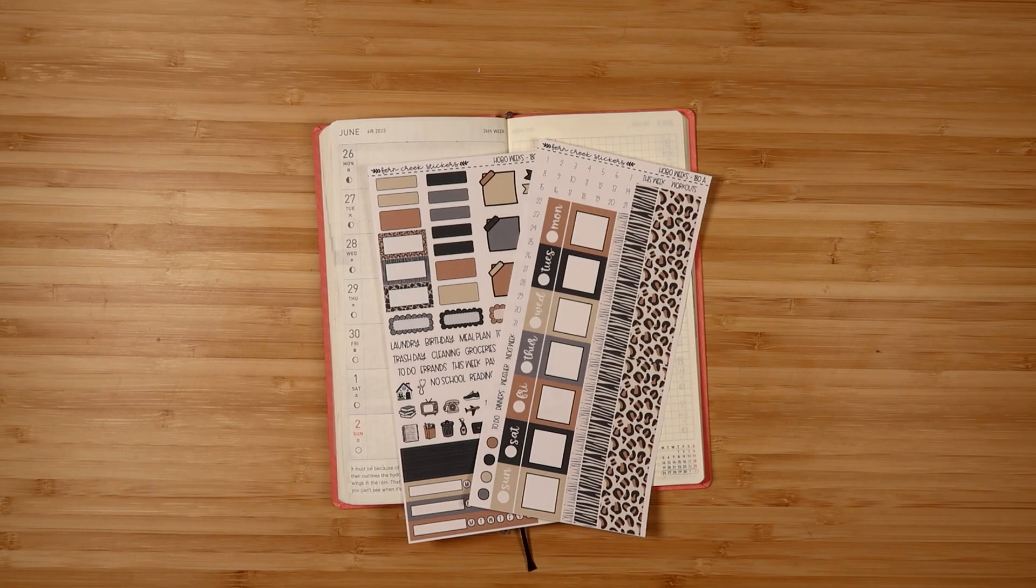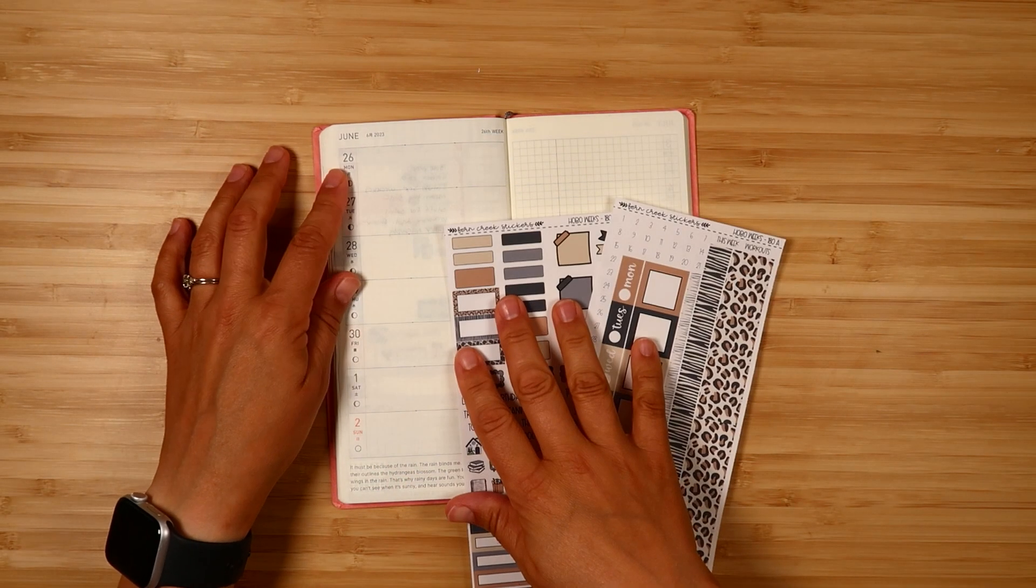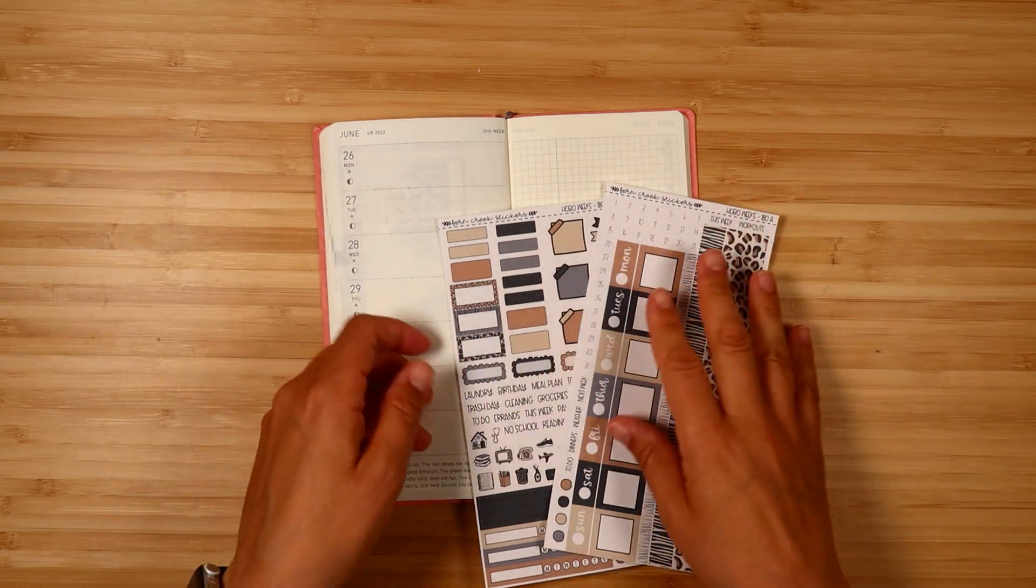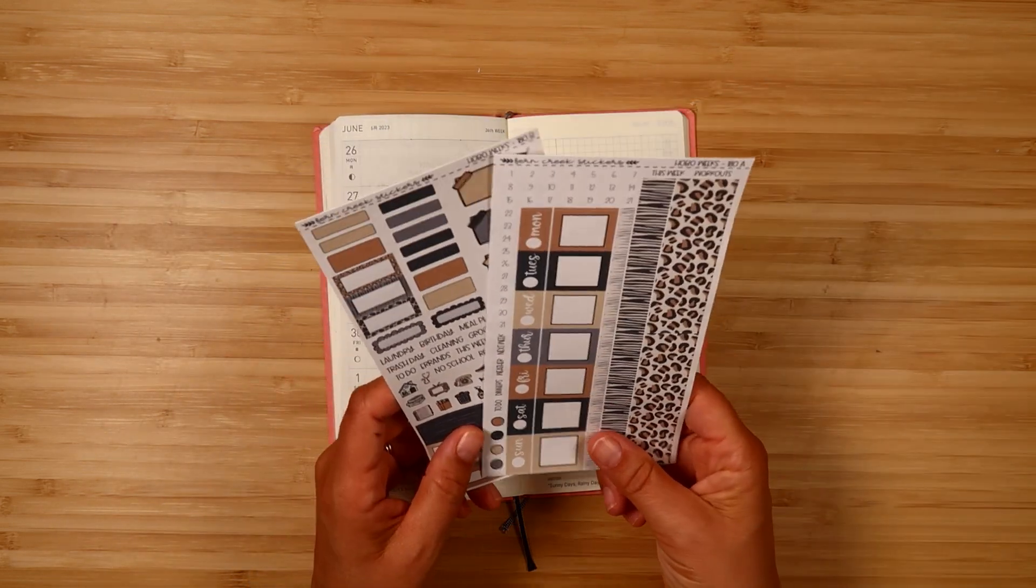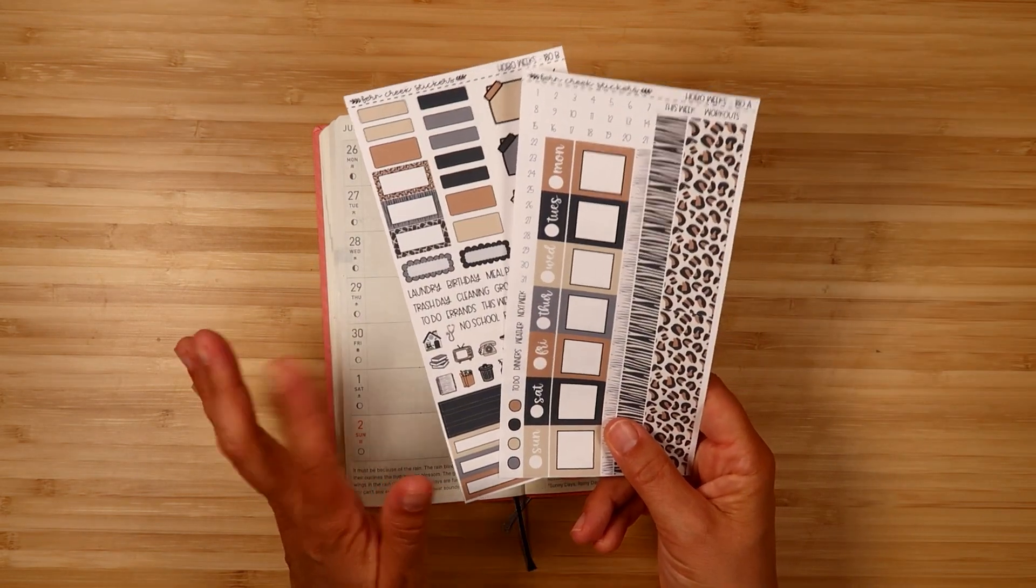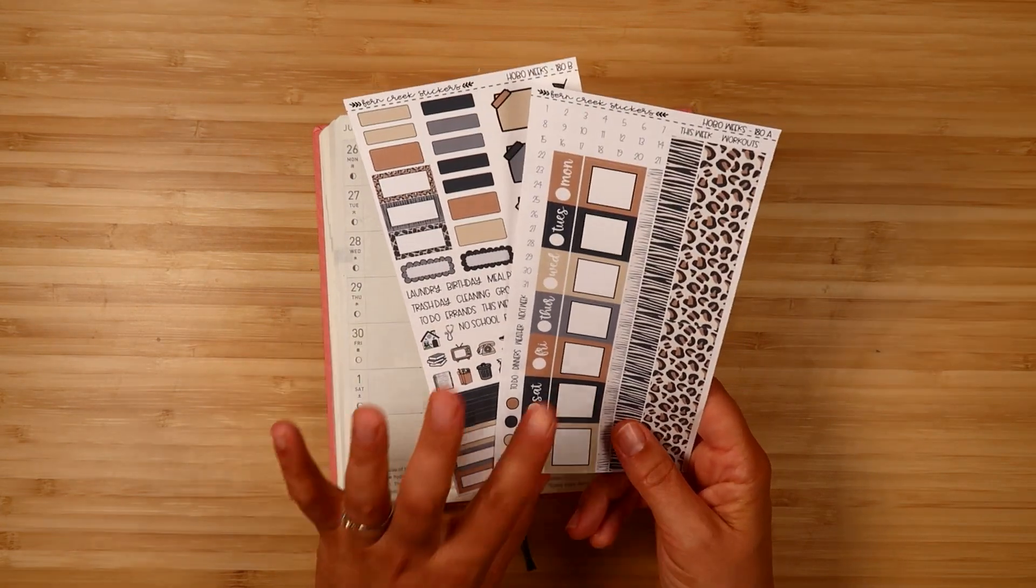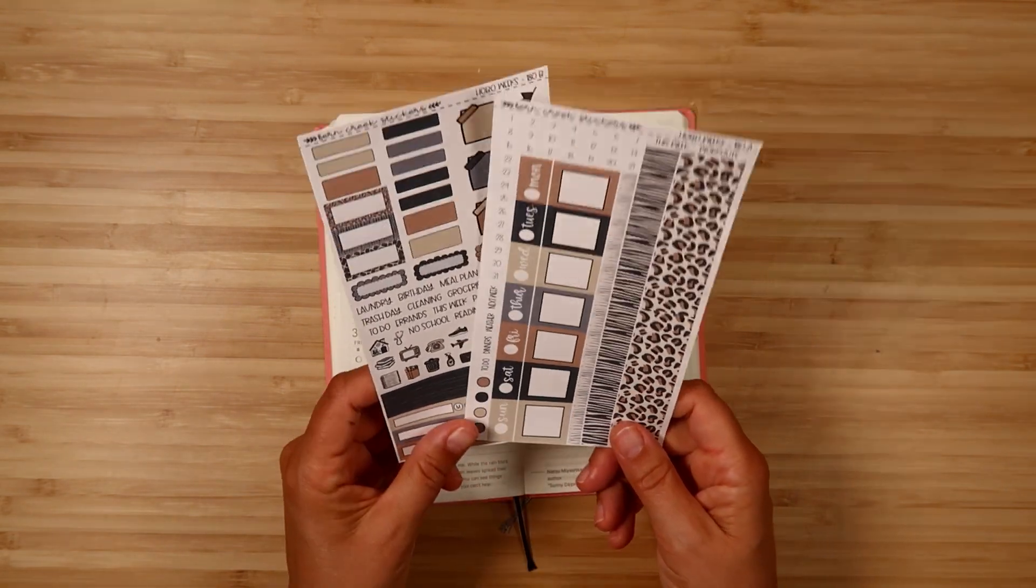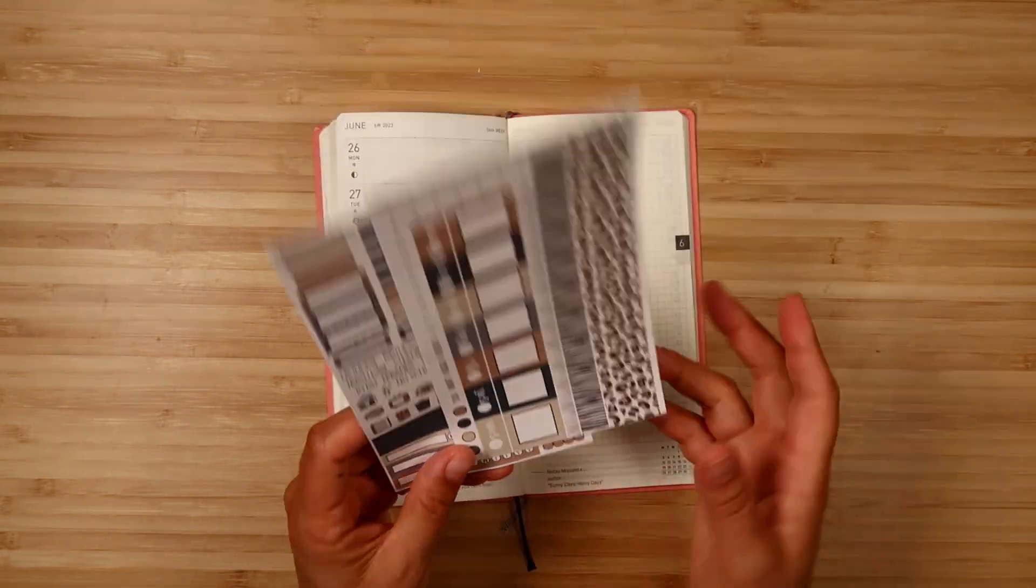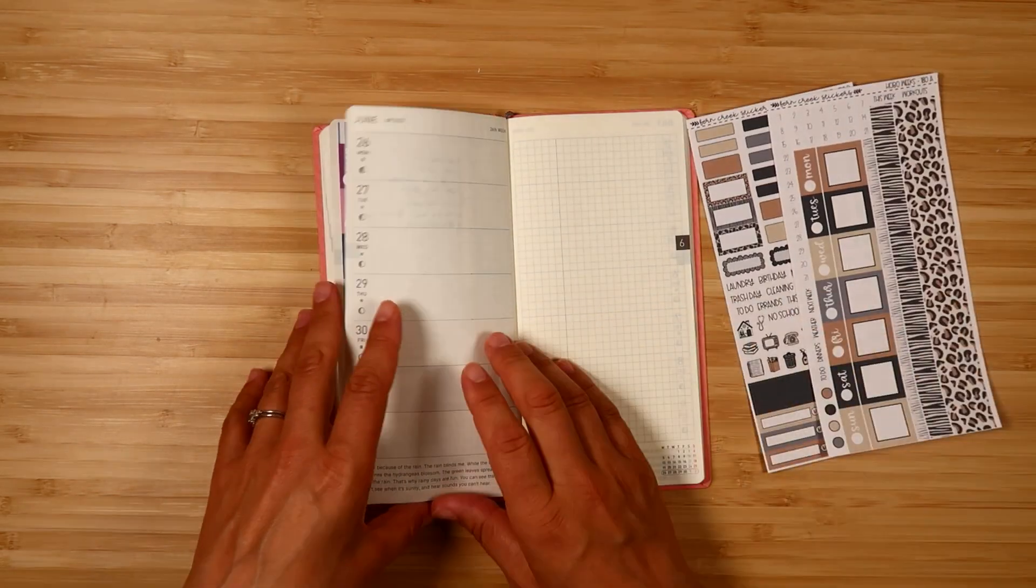Hi everyone, it's Elizabeth from Fern Creek Stickers, and I'm here today to plan the week of June 26th. I'm using this neutral safari kit this week, which is an August kit, but I went through and figured out all my kits for July and August. This was what I wasn't going to be using in the other planner that I'll be starting next week, so I figured I would go ahead and use this in my weeks.